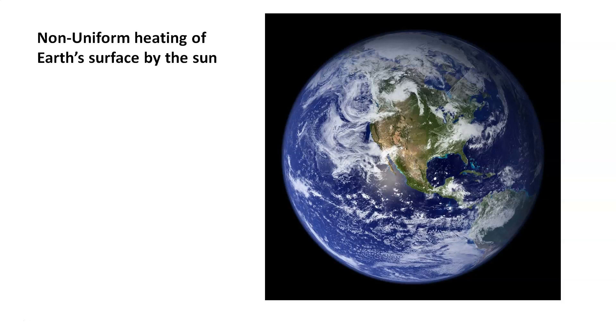Now the first reason is non-uniform heating of earth's surface by the sun. This is our earth and there is an imaginary circle which divides this earth into two equal halves. The upper portion is known as northern hemisphere and the lower portion is known as southern hemisphere. And this imaginary circle is known as equator.